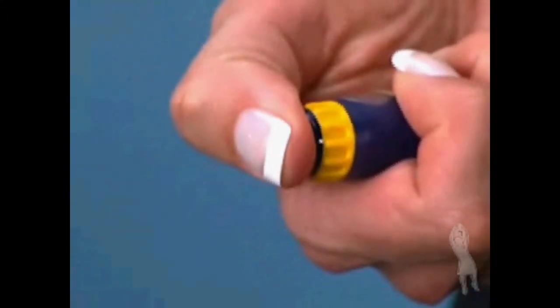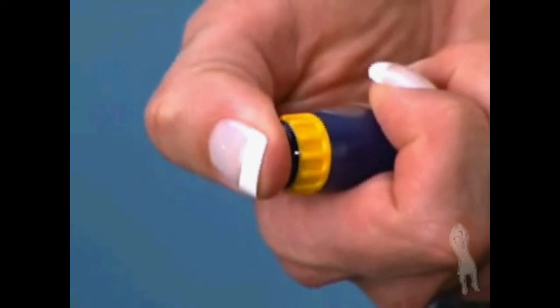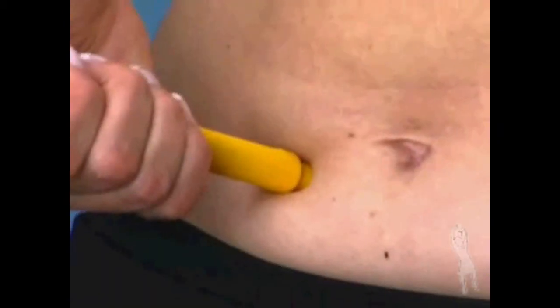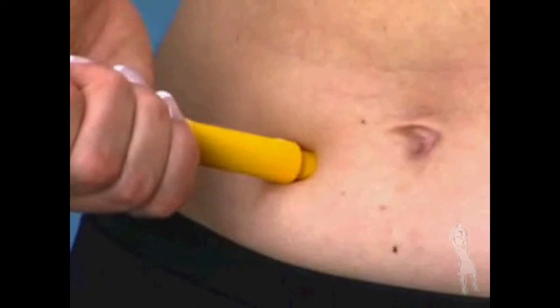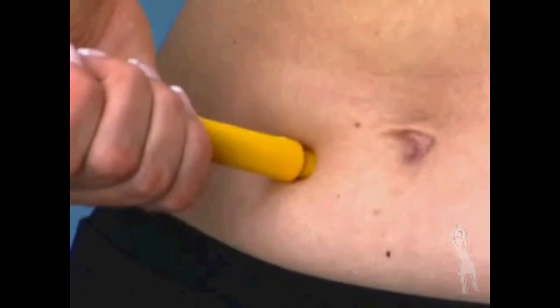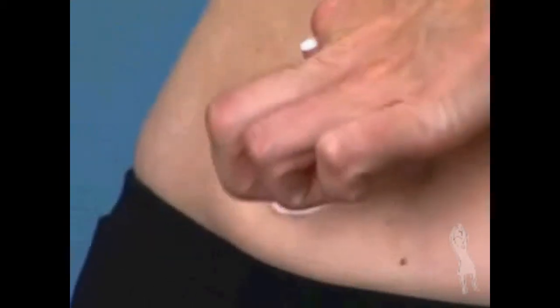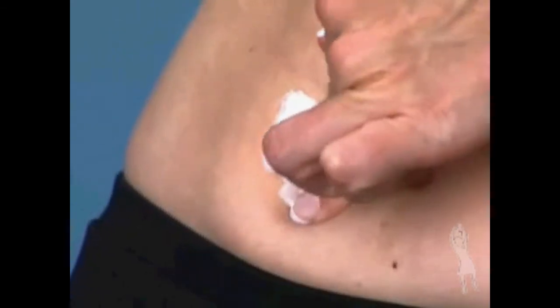Press the injection button all the way in to be sure you have given the full injection. Wait for five seconds before pulling the needle out of the skin. Pull out the BD Microfine needle and firmly press down on the injection site with a gauze pad.